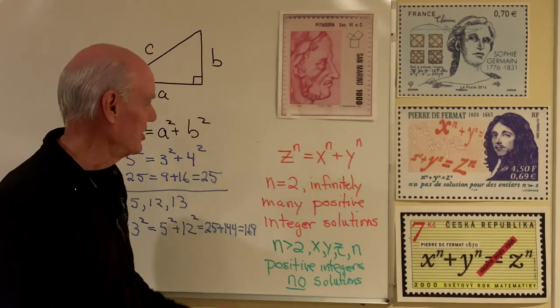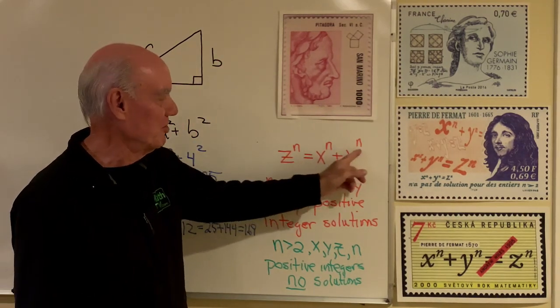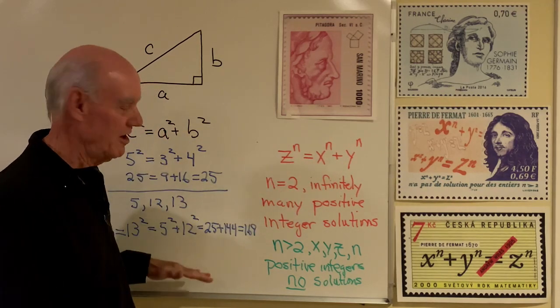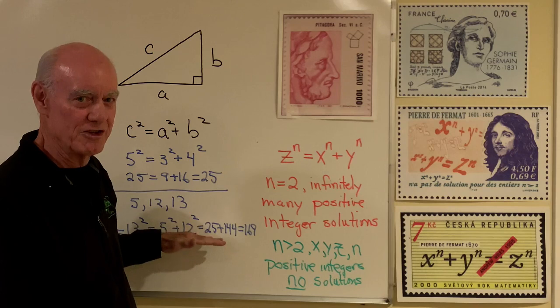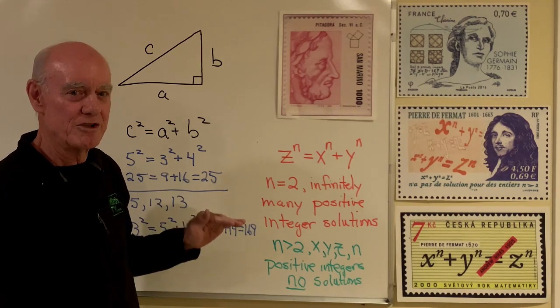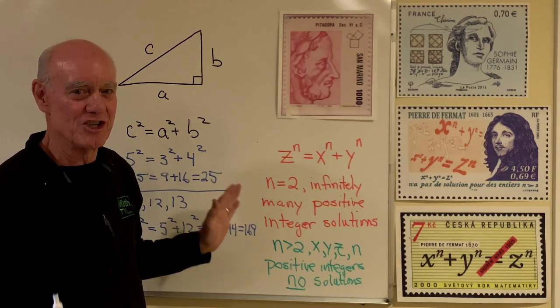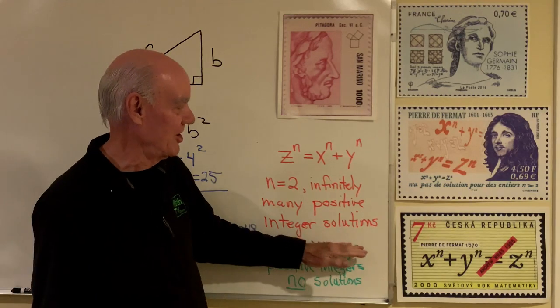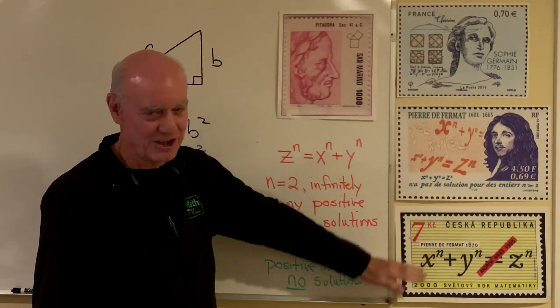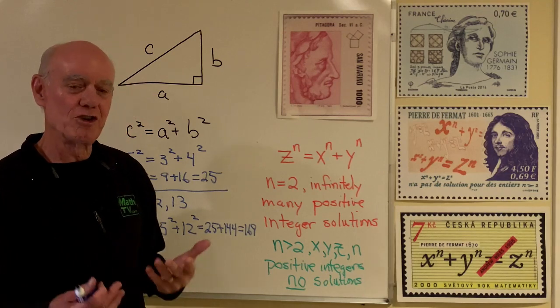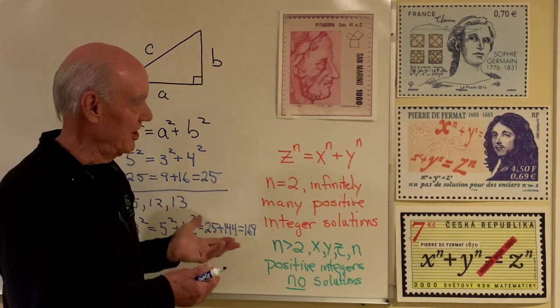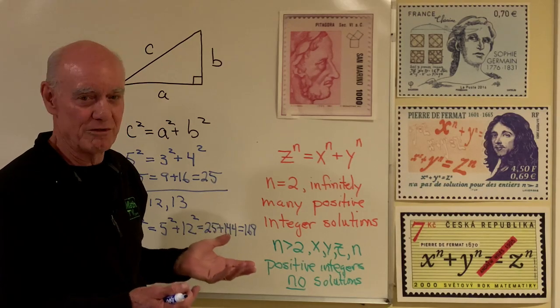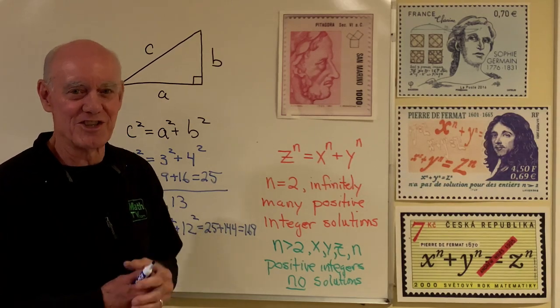So it's kind of interesting that if n is equal to 2 up here, there's just an infinite number of positive integers, triples, that you can find that do this. Once you go above 2, none exists. There is none whatsoever, and that's Fermat's last theorem, and it took a long time for people to actually prove it. So that's a look at expressions, equations, formulas, and then extending it to what we talked about before with Sophie Germain with Fermat's last theorem.